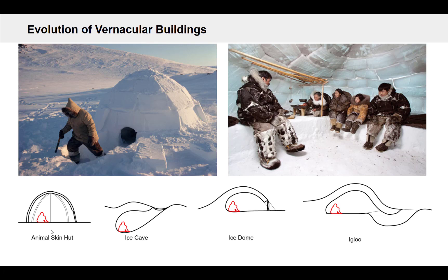People might have started first living in this region using something that was not as well insulated or as good at trapping heat — maybe some type of animal skin hut. But after a while, people realized that snow itself was a pretty good insulator with a lot of air pockets, so just burying yourself into the snow could actually keep you warmer than covering yourself in animal pelts. Maybe if you're just going to burrow into the ice, a lot of heat is going to escape out of the top. So if you were to build a dome above ground, you can try and trap a bit more heat in a bubble of warm air. Finally, at the pinnacle of the igloo archetype, you have a tunnel that goes up and into the structure so that you can actually capture this bubble of warm air and it doesn't seep out.